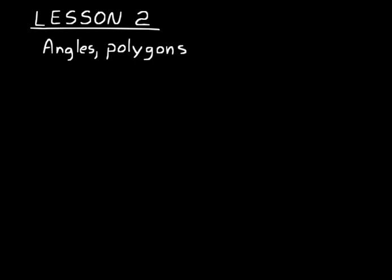Lesson 2 is some geometry review. We'll mainly be talking about angles, polygons, and some specific types of polygons such as triangles and quadrilaterals. Now in geometry there are a lot of definitions that are important to remember. I'll quickly go through a lot of these different definitions, but it's up to you to memorize them.